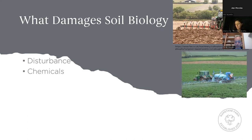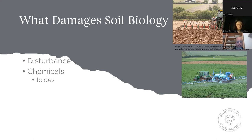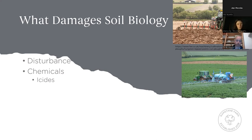The second damage is obviously chemicals. All the different -cides — acids in Latin meaning 'to kill' — whether it be nematocides, fungicides, or anything like that, they kill the soil biology as well. They don't discriminate. If you're applying these things, you've got to be really careful because you've got to understand the effects on your soil. Generally, a lot of times, spraying these chemicals — the problem it solves at the time is minor compared to the problem it creates in the soil long term. So you have to try and think more long term.